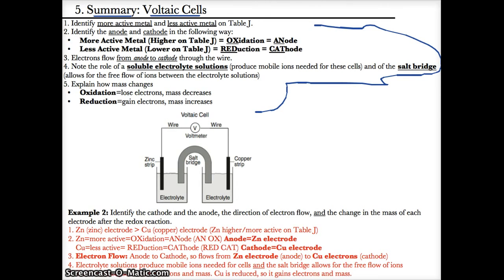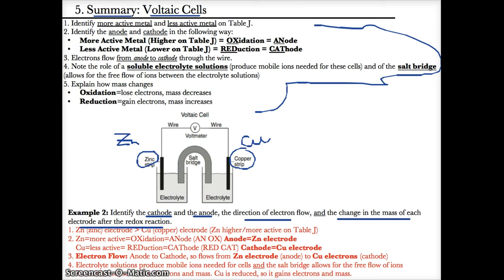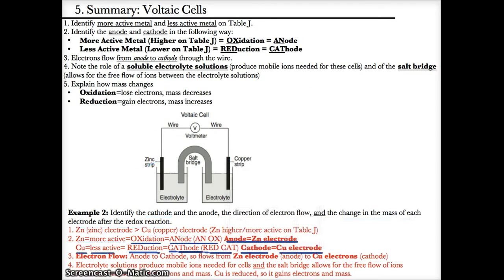In the second example, we have zinc and copper. Identify the cathode and anode, direction of electron flow, and change in mass of each electrode. Comparing Zn and Cu on Table J, Zn is higher up or more active than Cu. Since Zn is more active, it's more easily oxidized and based on anox will be the anode. Cu, which is less active, will be more easily reduced, and based on red cat, Cu will be the cathode.